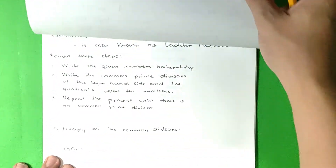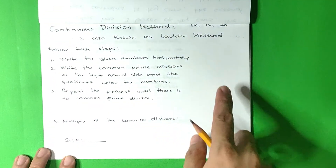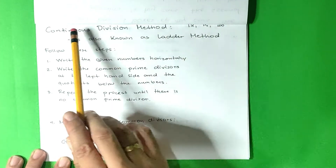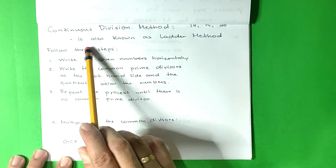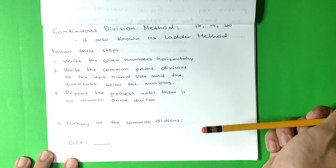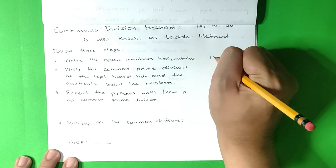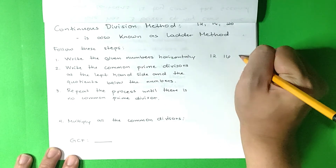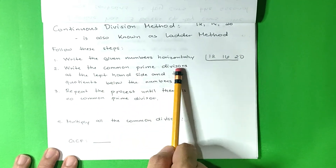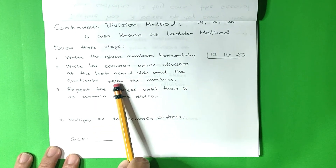To answer the problem, let us find the greatest common factor or GCF of 12, 16, and 20 using the continuous division method, also known as the ladder method. Follow these steps. Step 1: Write the given numbers horizontally. Step 2: Write the common prime divisors at the left-hand side and the quotients below the numbers.